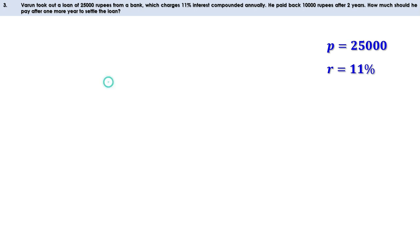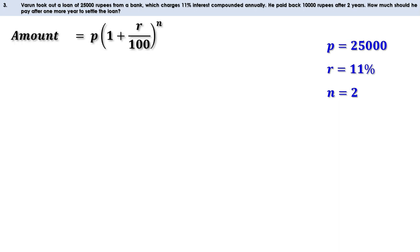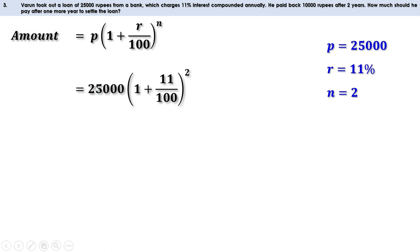Let us take N as 2. The amount after N years is P into (1 plus R by 100) all raised to N. Replacing each letter by the corresponding value: P is 25,000, R is 11, and N is 2. So this can be written as 25,000 into (1 plus 11 by 100) all squared.